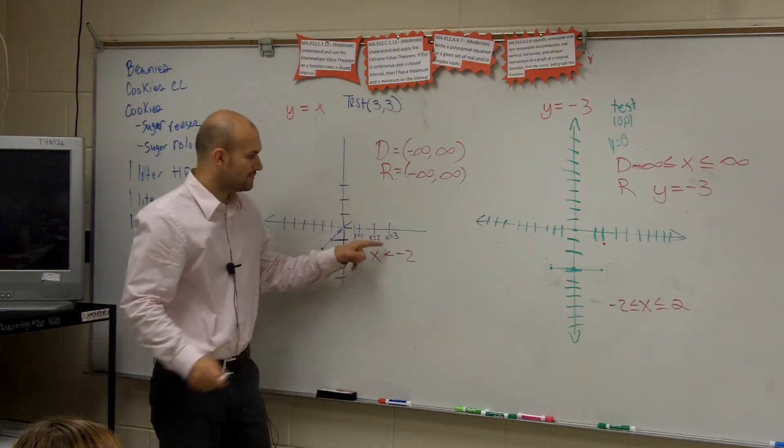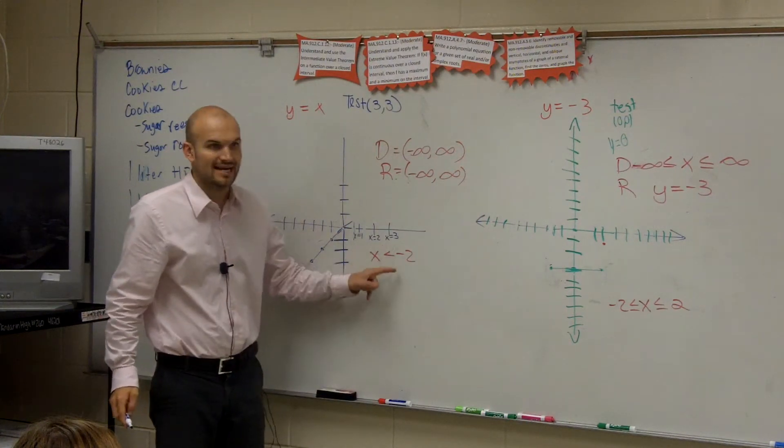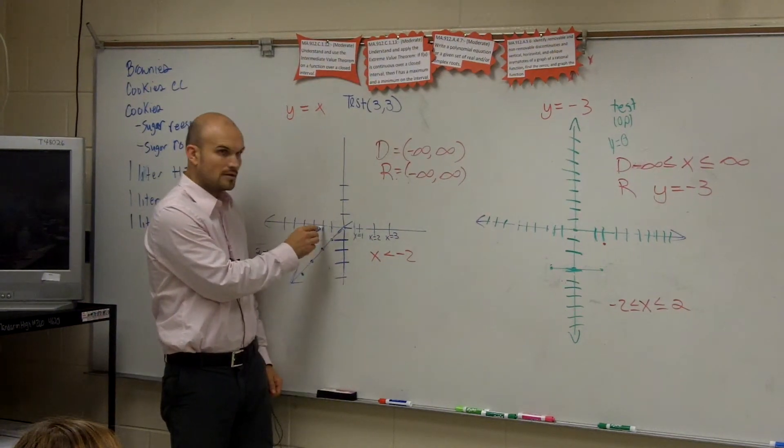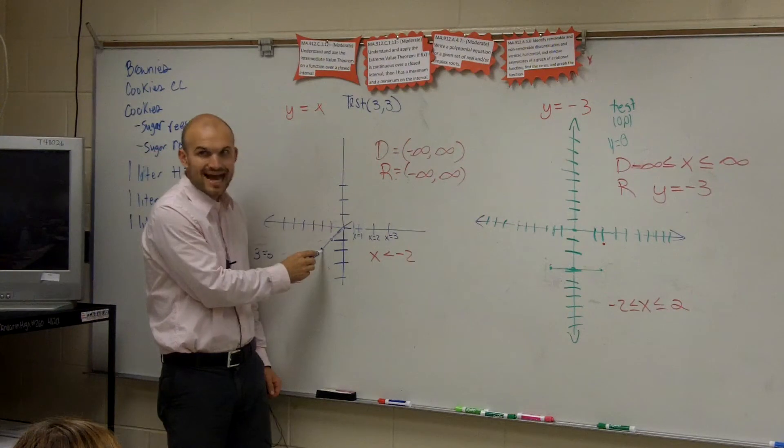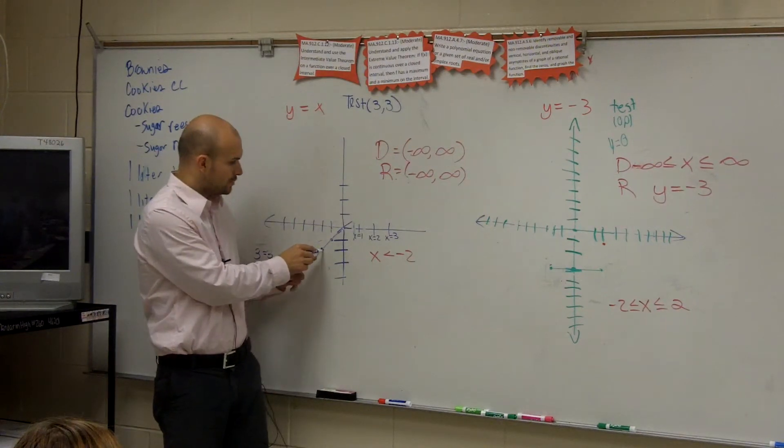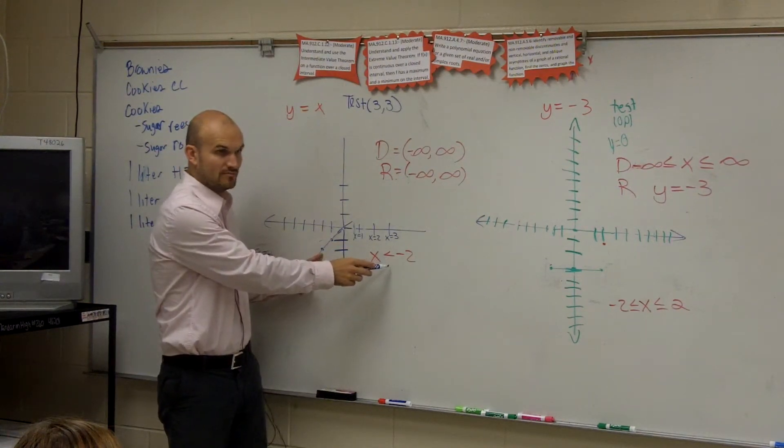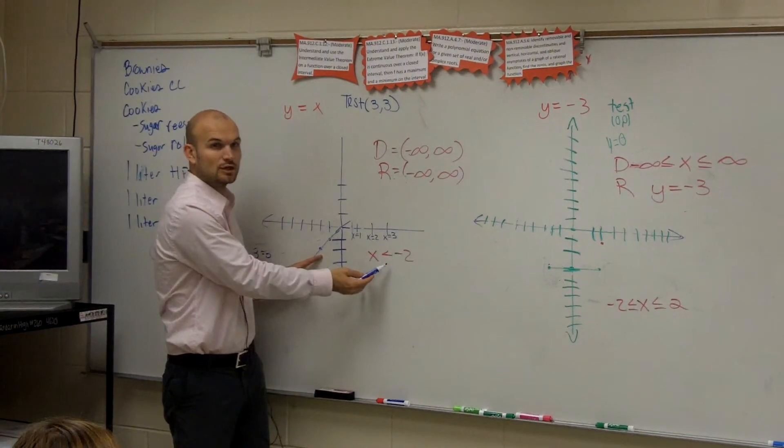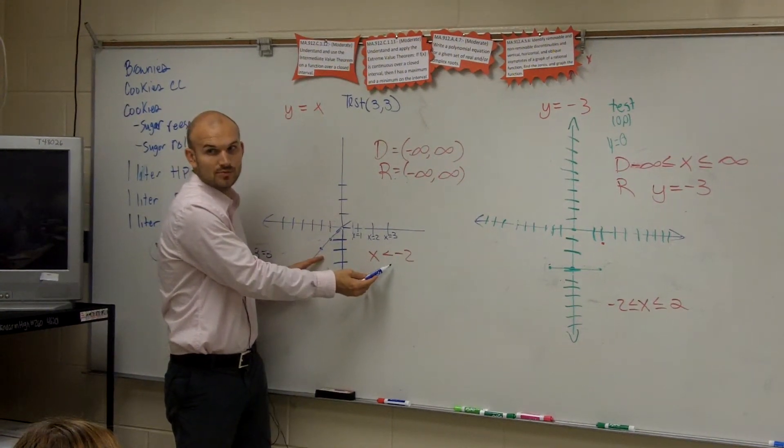I only want you to graph this when x is less than negative 2. So let's go where negative 2 is. So x is less than negative 2 at this dot right here. Now, looking at this inequality symbol. Remember when we were graphing linear inequalities? When it's less than, does that mean it includes the point or does not include the point?